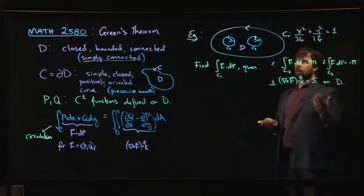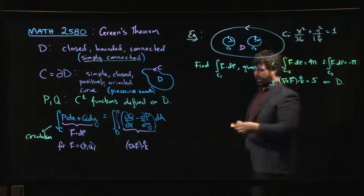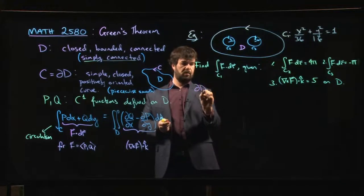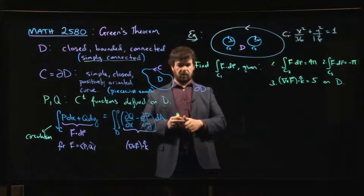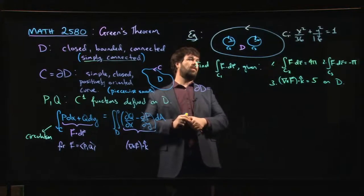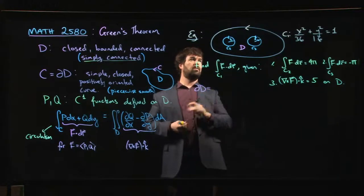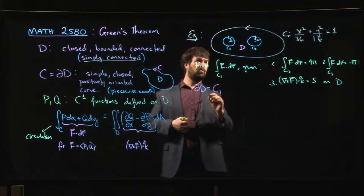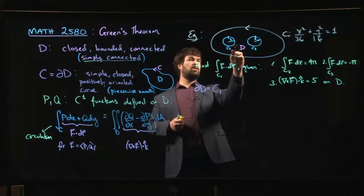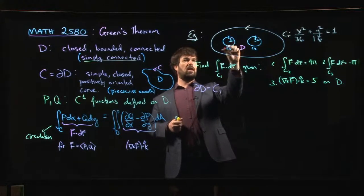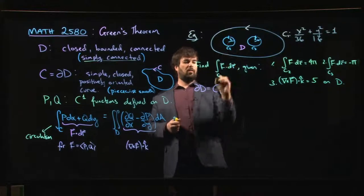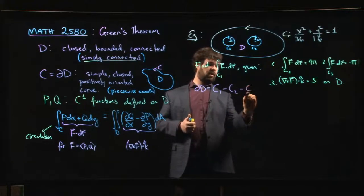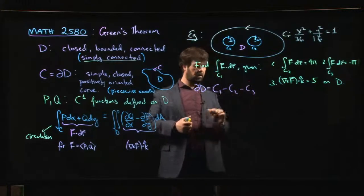So how do you do this problem? How do you deal with the fact that if I wanted to know the boundary of D, we talked about this in our videos on curves, that for a region like this which is not simply connected, the boundary of D is going to be C1, the outside. And then for C2 and C3, in order to have the region on my left as I go around, I have to take the opposite orientation. So minus C2, minus C3.